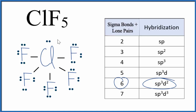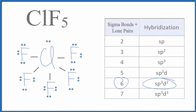Again, when we find the hybridization, we're looking at how the orbitals have mixed to form hybrid orbitals and how those hybrid orbitals are bonding with the fluorine atoms. This is Dr. B — thanks for watching.